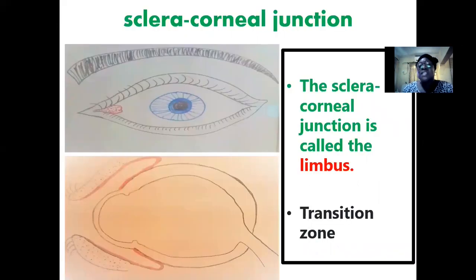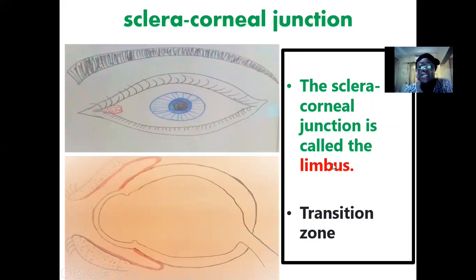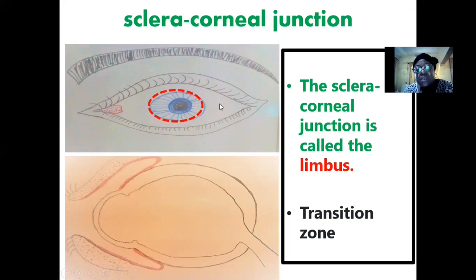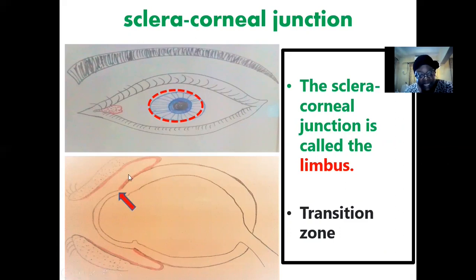The sclerocorneal junction is the region where the sclera and cornea meet and become continuous. The region where they form a link is called the limbus — a transition zone where the cornea overlies the iris and pupil and becomes continuous with the sclera. This can be seen in the lower image: the sclera, the cornea, and at the point where they mate is the sclerocorneal junction.